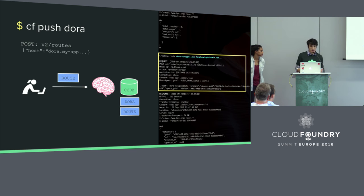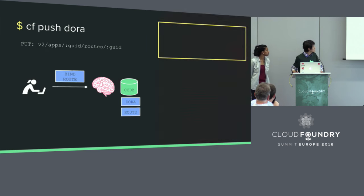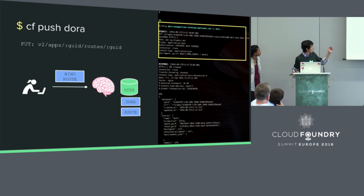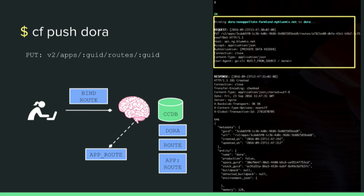After this is done, so far we have an empty app with a route, but they don't correlate to each other in any way. It wouldn't function unless we bind them together. So that's exactly what the CLI does next — it binds the app to the route with a request to CC. CC is going to remember the information in the database, but at the same time CC is going to broadcast the newly created route to the rest of the world, so components like GoRouter will know which application to route requests to when they come in.